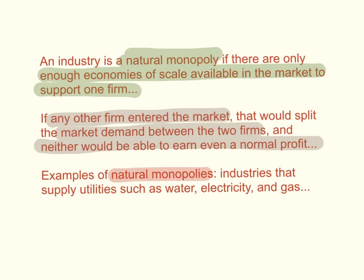Examples of natural monopolies are industries that supply utilities such as water, electricity, and gas. Supplying water, electricity, or gas requires massive investments in infrastructure — building telephone cable lines or piping and so on. These are industries where economies of scale would be very hard for multiple firms to realize because of the massive investment. Remember that some monopolies are natural monopolies and there's only enough economies of scale for one firm in this market.